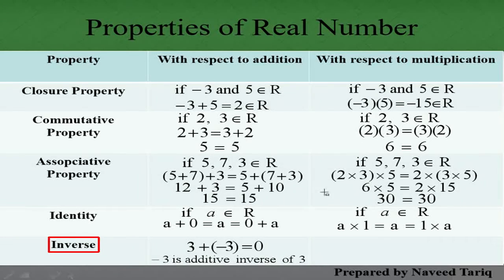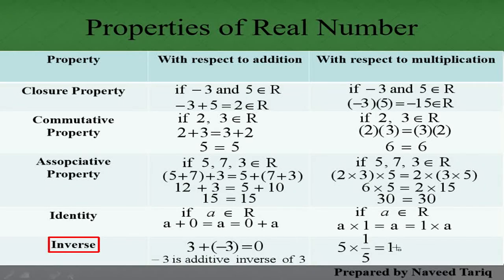Multiplication میں Multiplicative Inverse: ہمارے پاس 5 ہے۔ ہم کوئی ایسا number multiply کریں کہ answer Multiplicative Identity یعنی 1 آجائے۔ 5 × (1/5) = 1، کیونکہ 5 cancel ہو جاتا ہے۔ تو 1/5 کو 5 کا Multiplicative Inverse کہتے ہیں۔